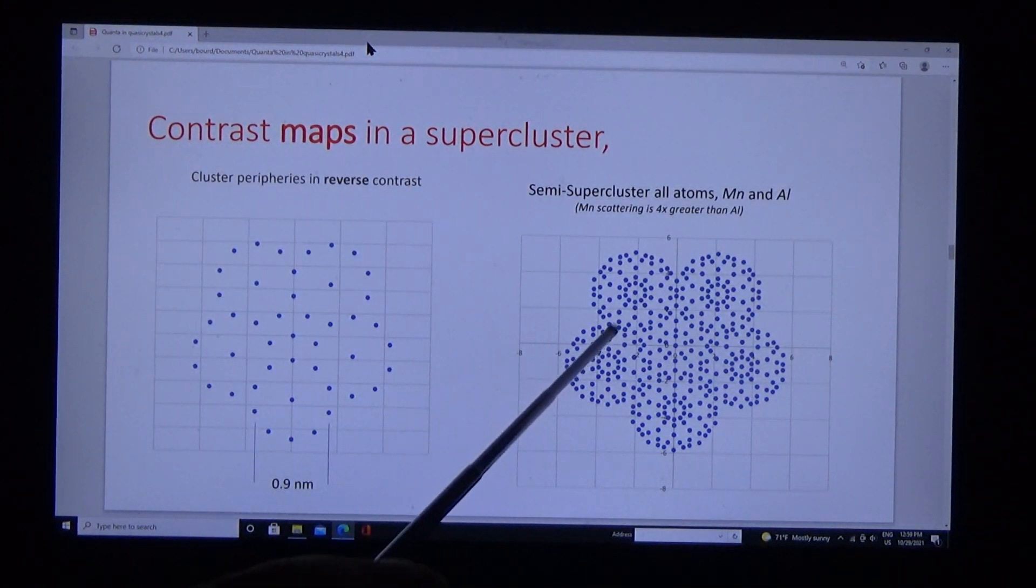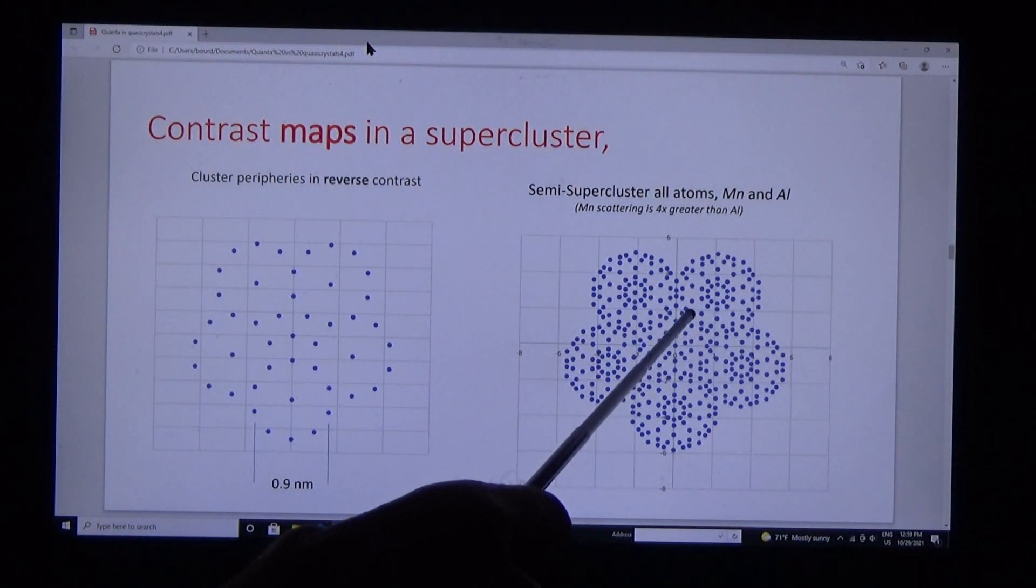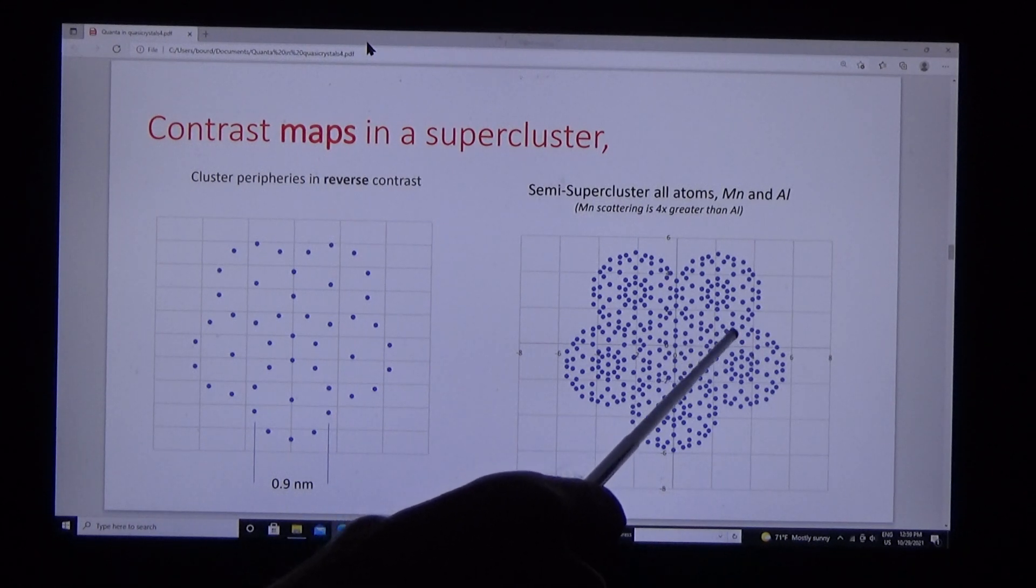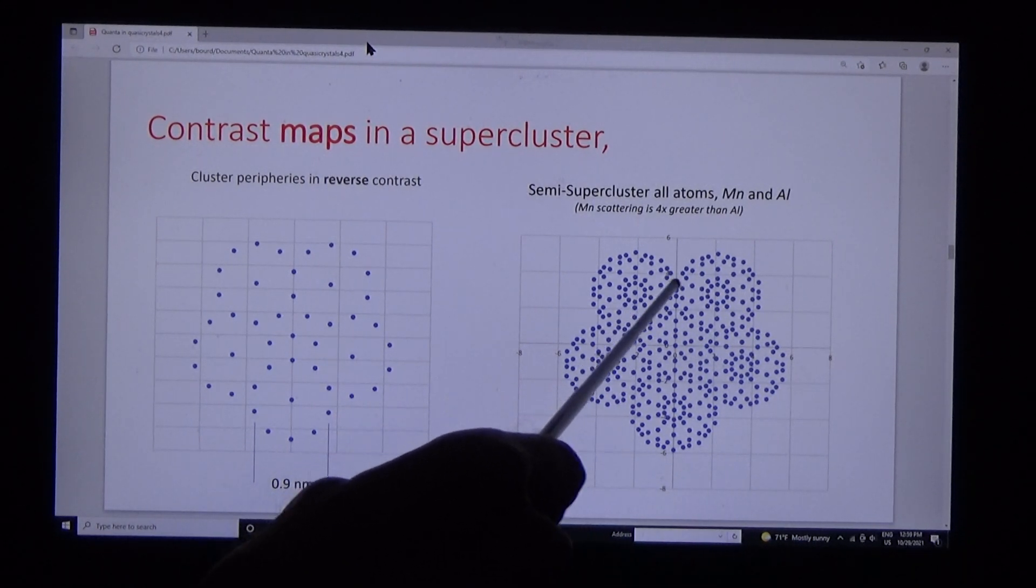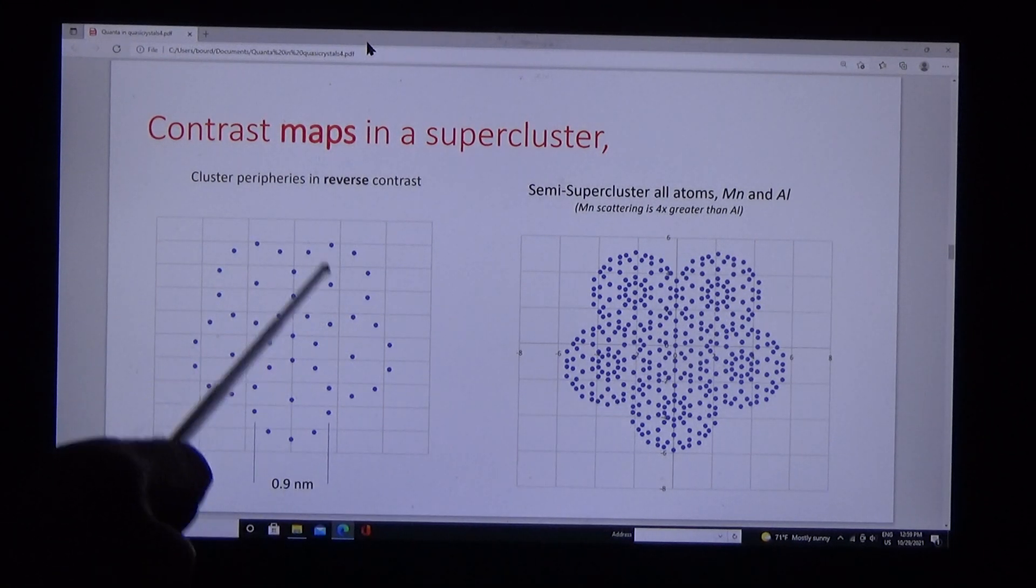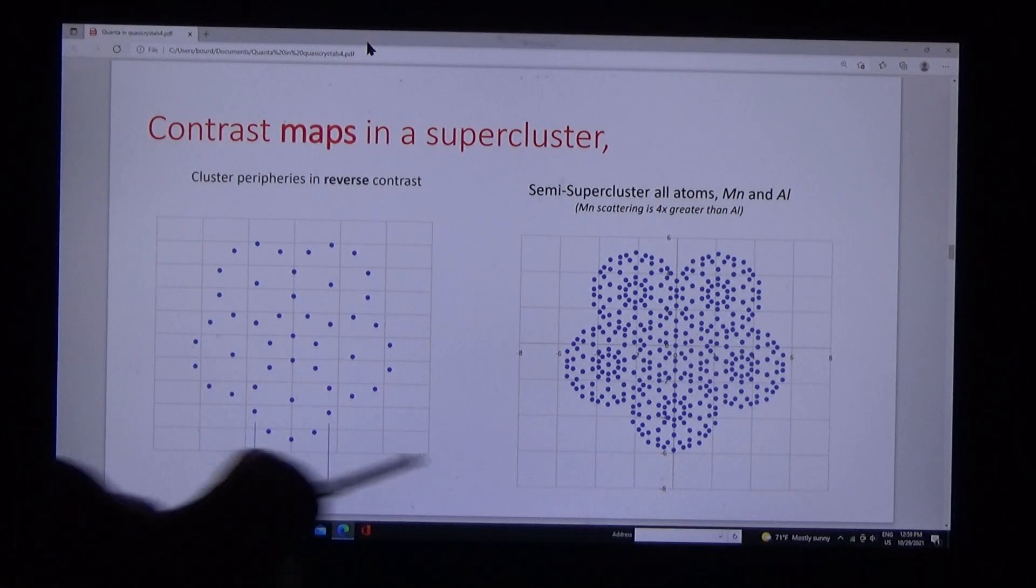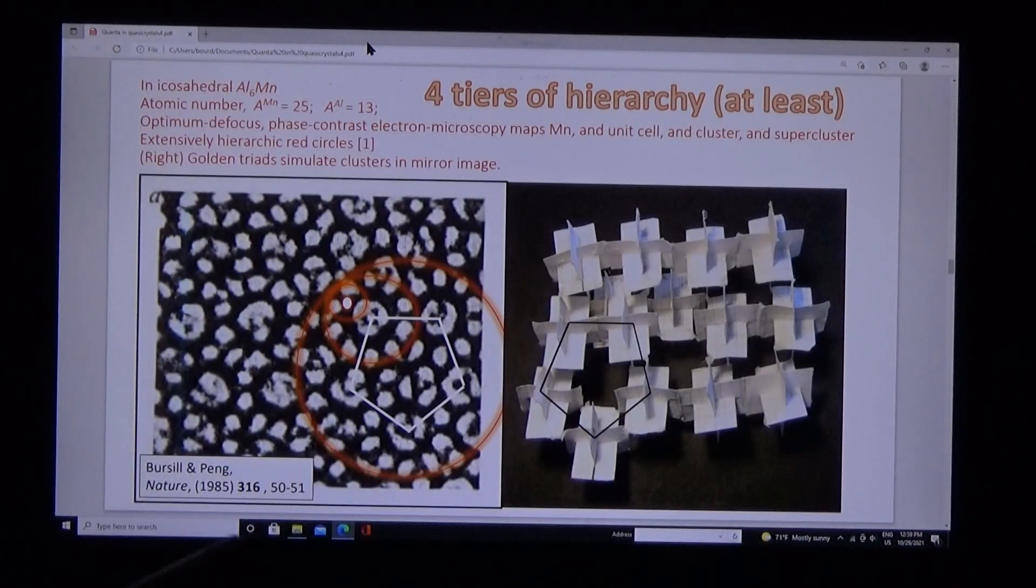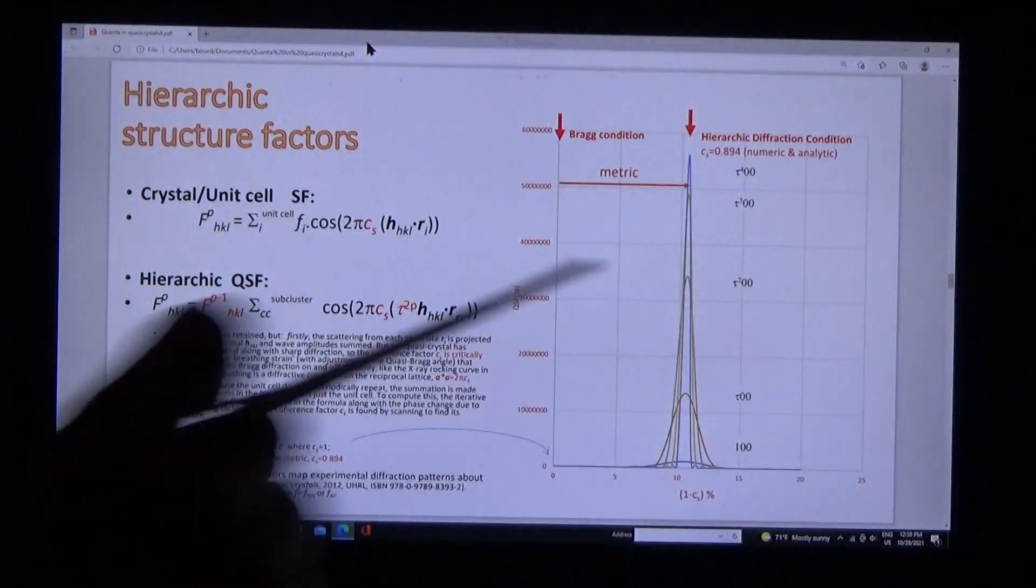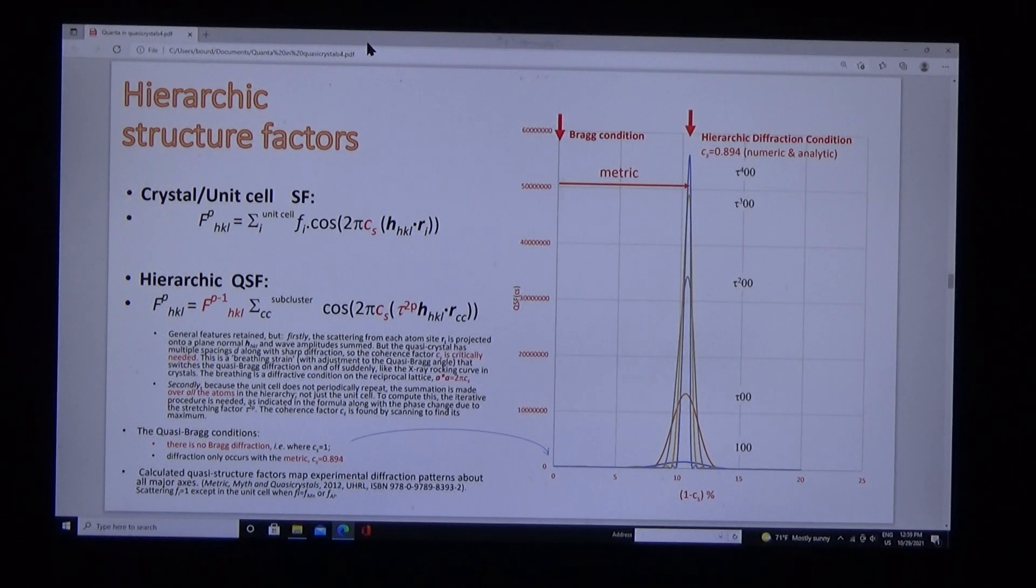Here's another map. The cluster contains aluminum atoms on the periphery and manganese atoms inside them. Here are the peripheries, and they again match the phase contrast, optimum defocus, as you can see. So we understand the images.